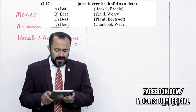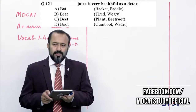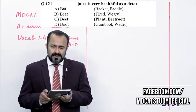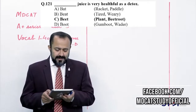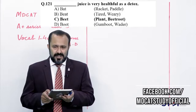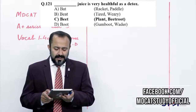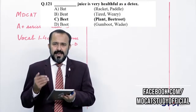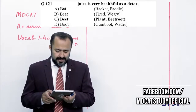Question 121: '___ juice.' اب juice کسی fruit، سبزی یا کھانے والی چیز کا ہو سکتا ہے۔ کھانے والی چیز صرف Charlie ہے — BEET (چکندر)۔ Beet juice is very helpful as a detox — detox کا مطلب body کے toxic elements کو باہر نکالنا۔